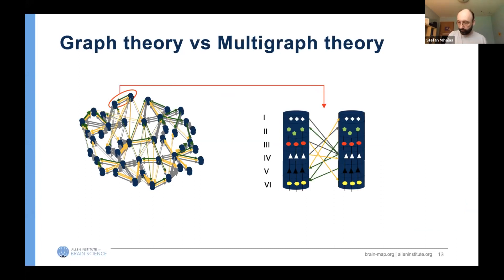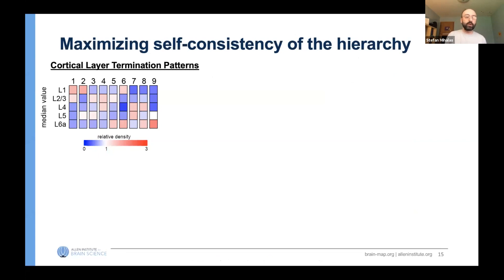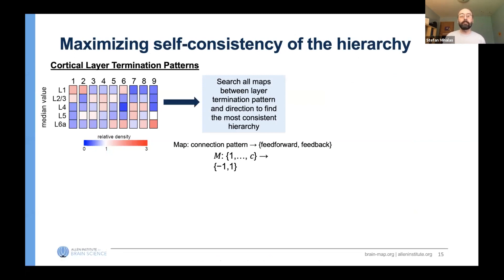I was very happy to be joined in analyzing the graph theory by a fantastic mathematician, Hannah Choi, who is starting a faculty position at Georgia Tech next year. The main part of what we did initially was to characterize the types of connections which are present, and for that we did an unsupervised clustering of the layer patterns. We did that for both corticocortical connections and ended up characterizing nine connectivity patterns generally, and one of the most important next steps was trying to build a mathematical definition of hierarchy.